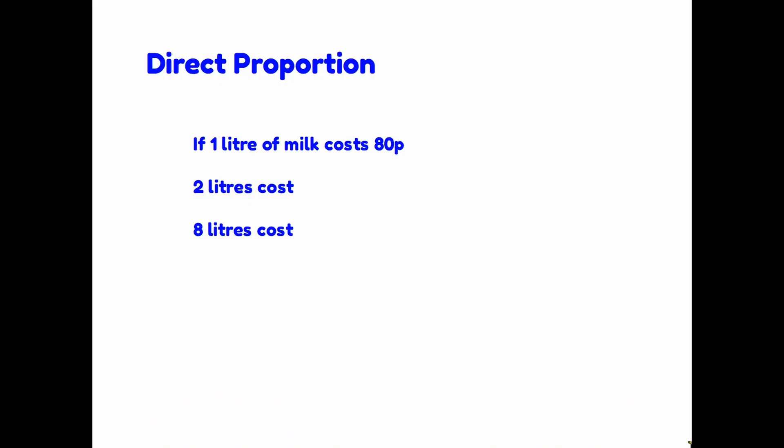Let's start with direct proportion. The general rule for direct proportion is that if one amount increases, so does another. Let's have a look at a very simple example. This is saying if one litre of milk costs 80p, how much does two litres cost? Well, quite simply, if one litre is 80p, we look at what has happened to the litres. We've gone from one to two, so it's doubled. So the price has also doubled, and that will be £1.60. Similarly, if we've got eight litres, we've gone from one up to eight, so we have eight times more. We would take the 80p and multiply by eight, and would therefore get £6.40. So quite simply, if the number of litres of milk increases, so does the price. That is direct proportion.